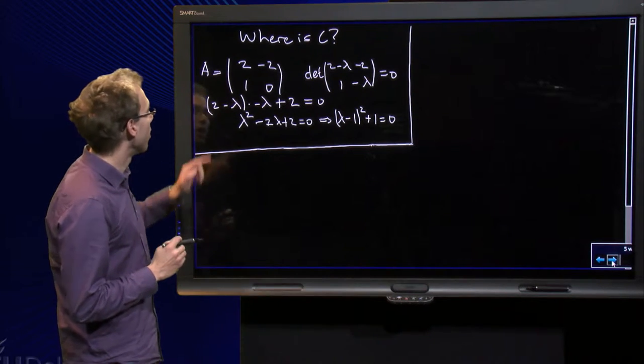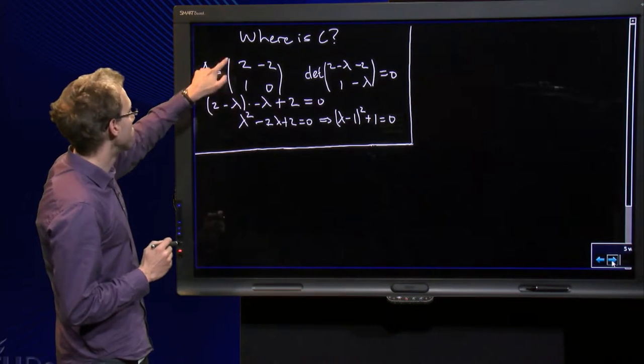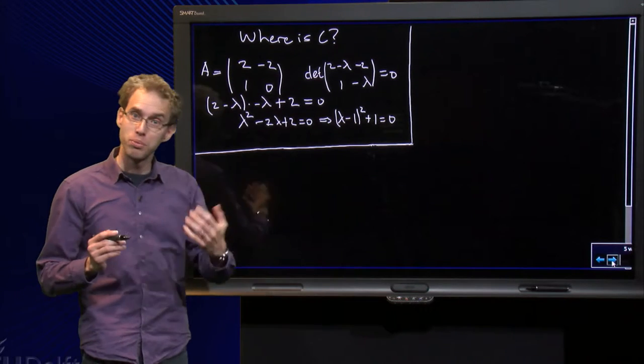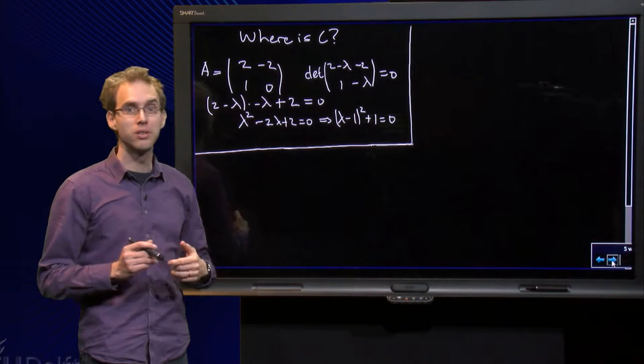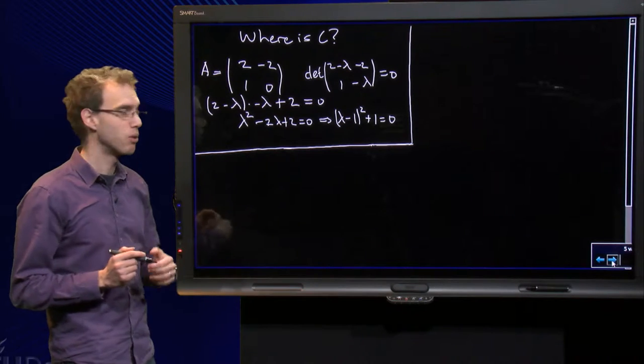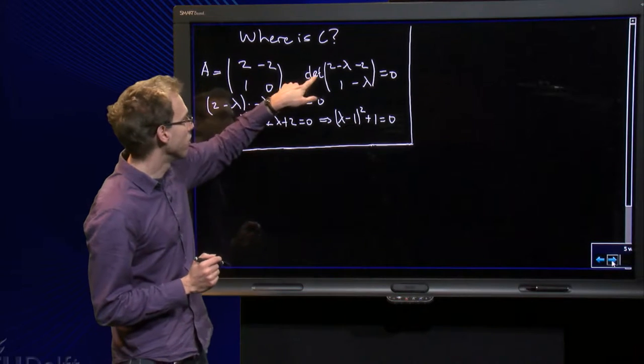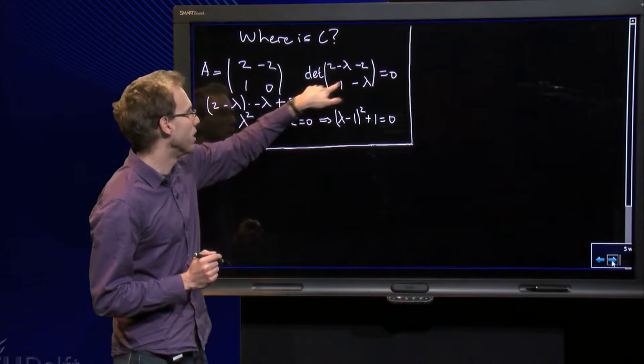Let us start out with this matrix over here, and let's compute the eigenvalues just to see that they are in fact complex. So I take the determinant, 2 minus lambda minus lambda minus 2, 1, set it equal to 0.